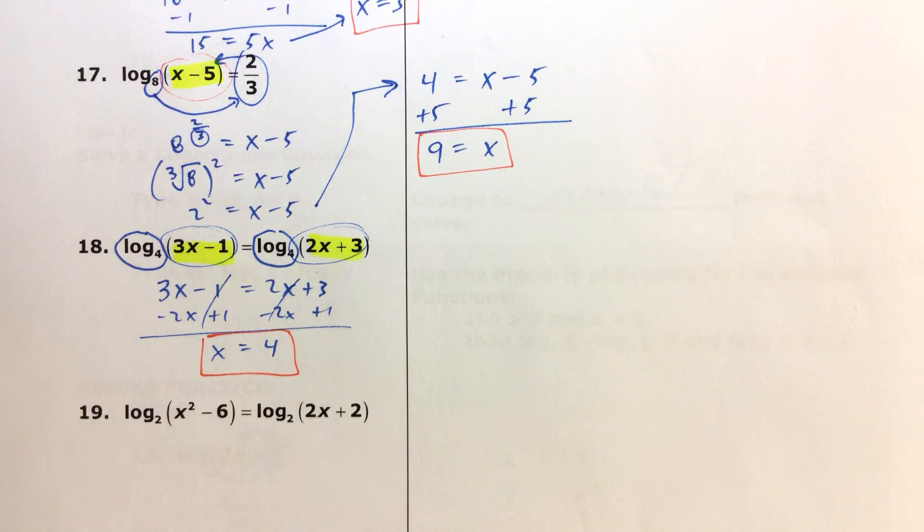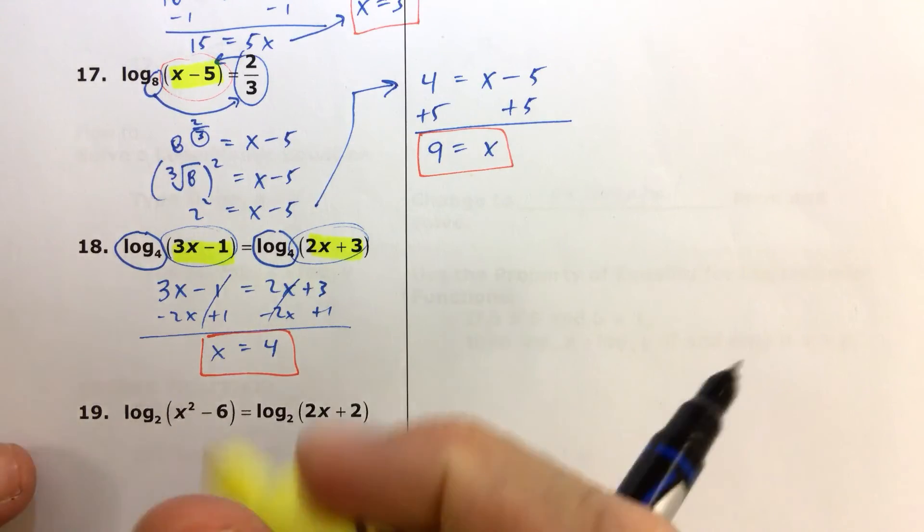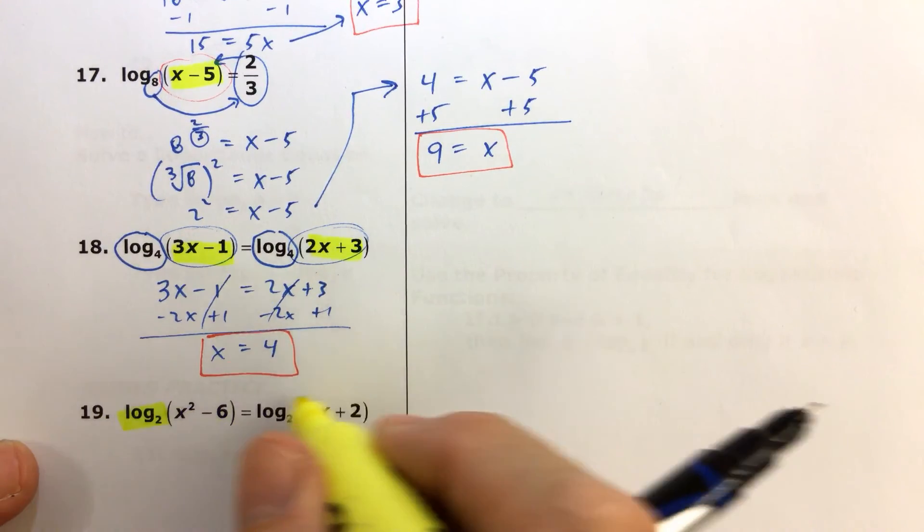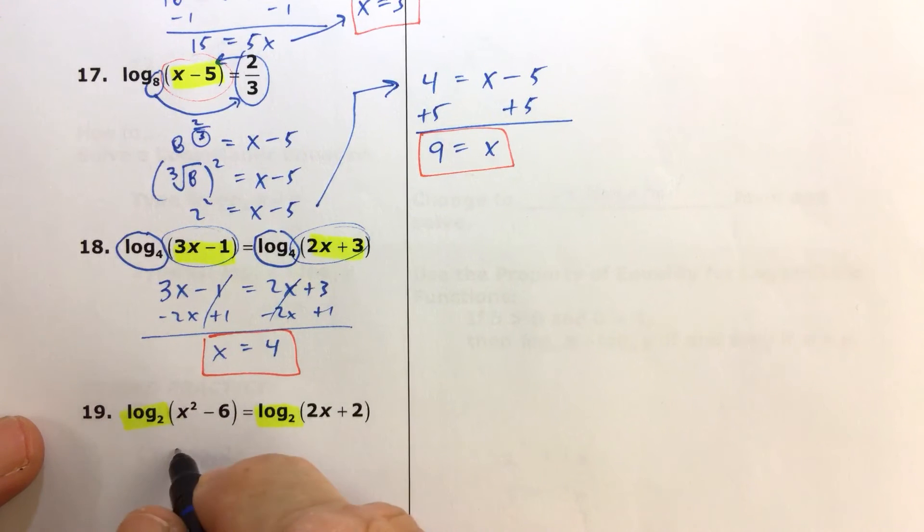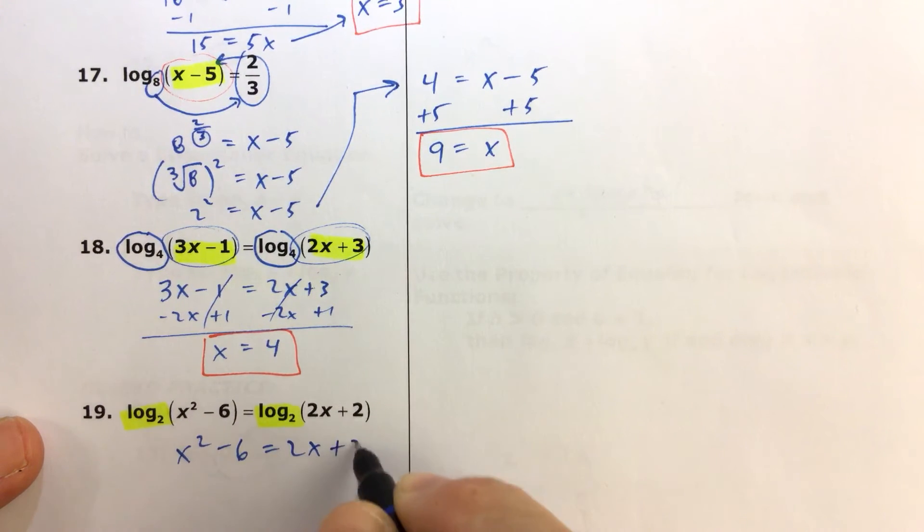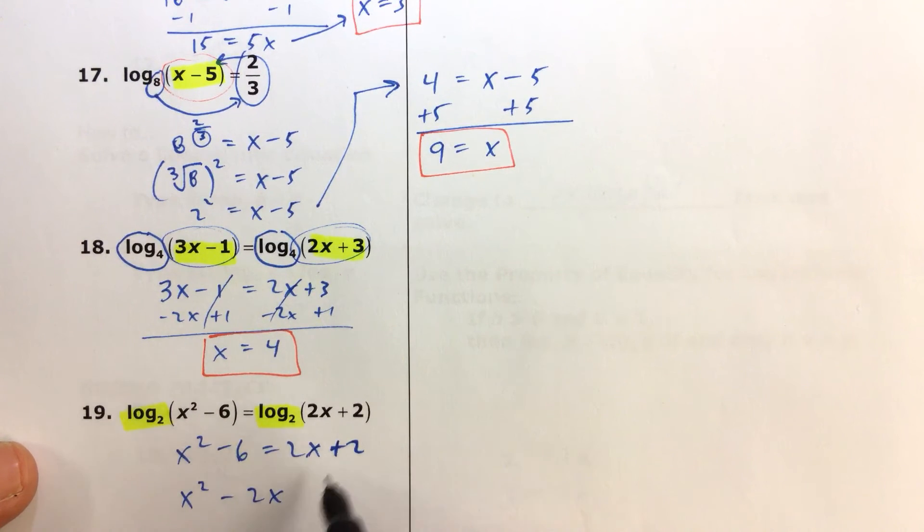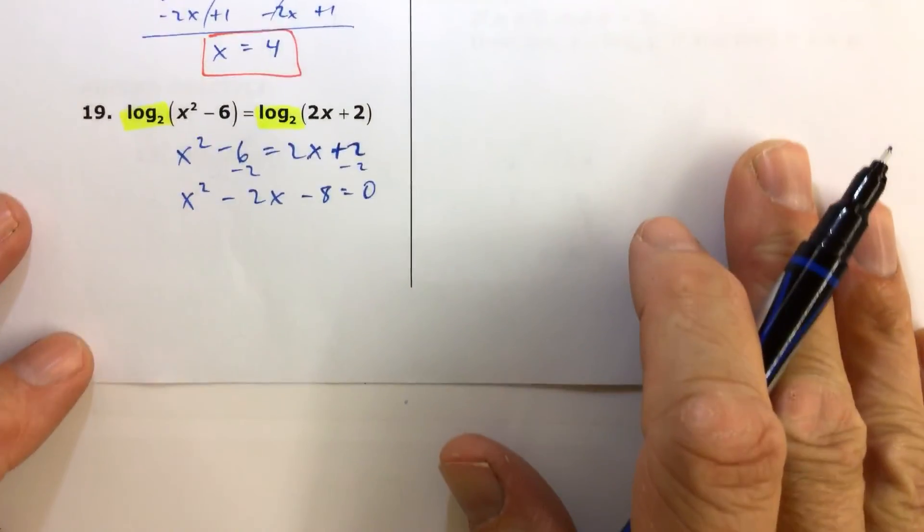And likewise, here for number 19, we see that the logs are the same base, and so therefore, the arguments, or I should say the answers, have to be the same. I usually call it arguments, but I'm calling it answers now. So we have x squared minus 6 has to equal 2x plus 2. Here we have a quadratic equation, so we're going to gather all the terms to one side. x squared minus 2x, we're going to also subtract 2 from both sides. So we get x squared minus 2x minus 8 is equal to 0. Let's move that on up here.